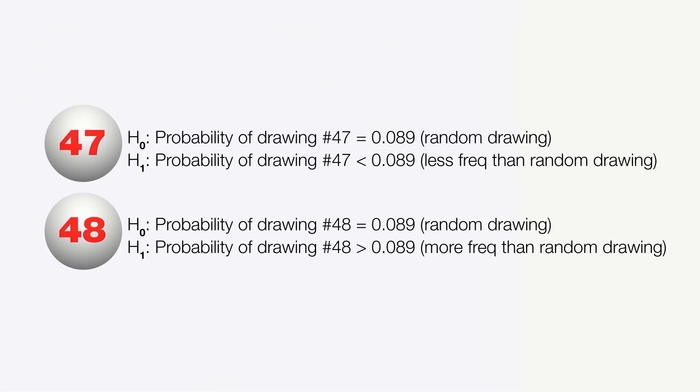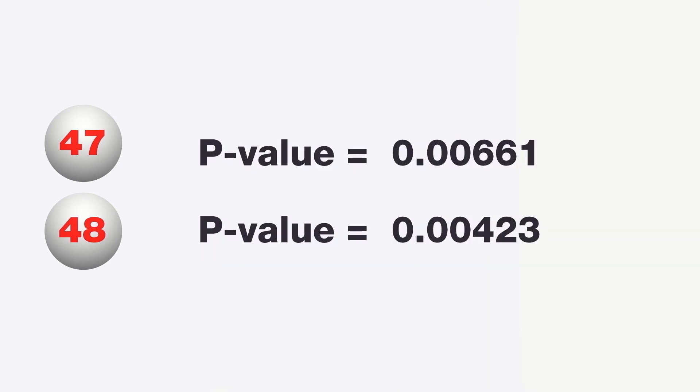Let's test if balls number 47 and number 48 were drawn at significantly different rates than what would be expected from a random drawing, by performing a one-proportion test on each ball as shown here. The p-values for these tests are 0.00661 and 0.00423. This would imply we have strong evidence the drawing was not random.